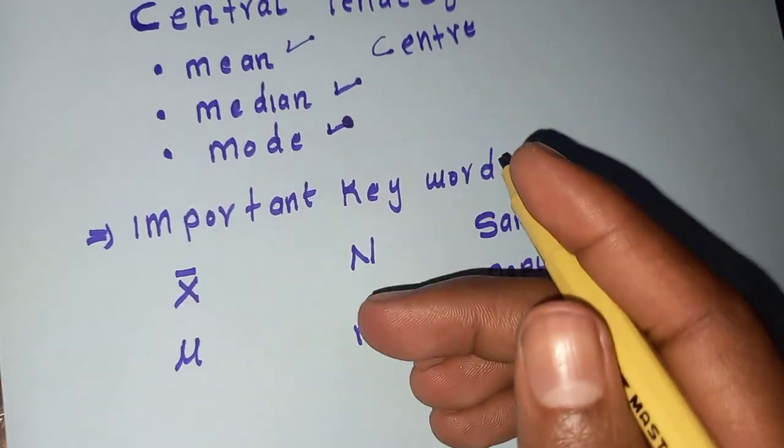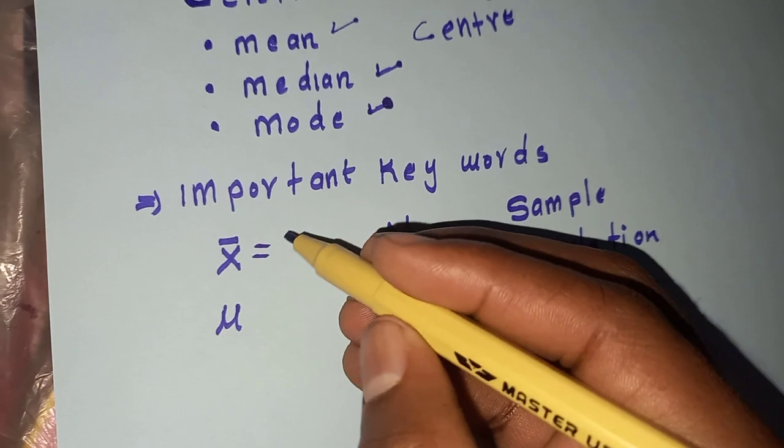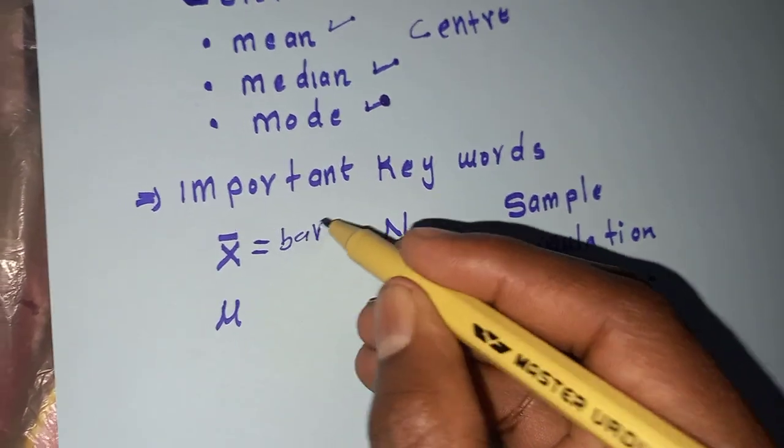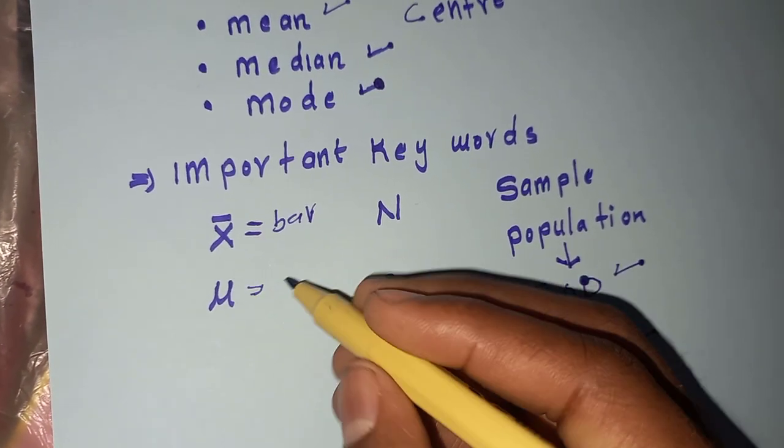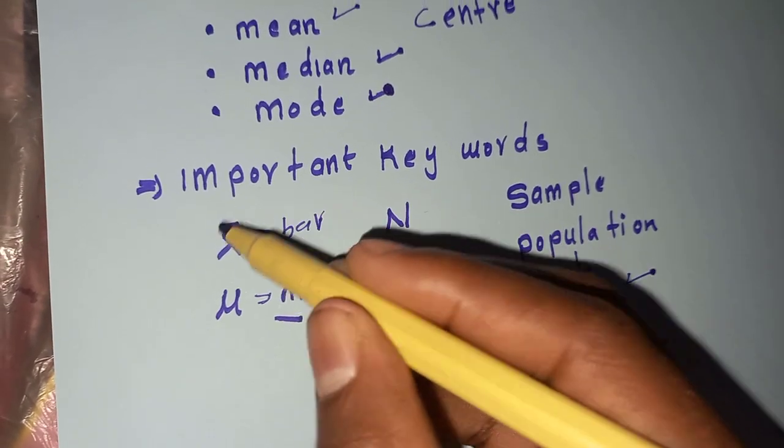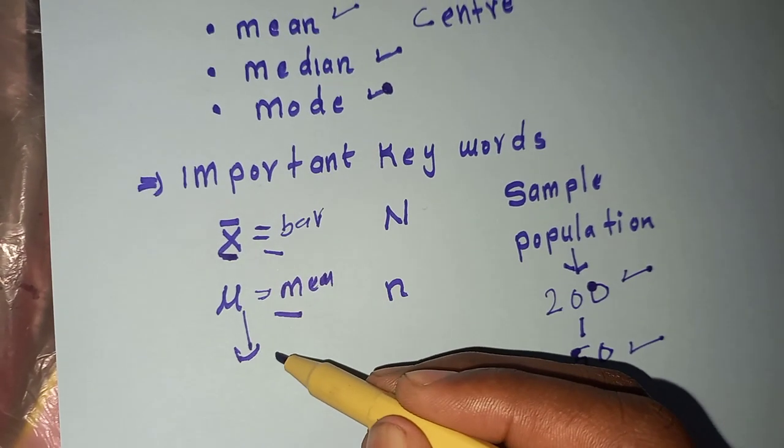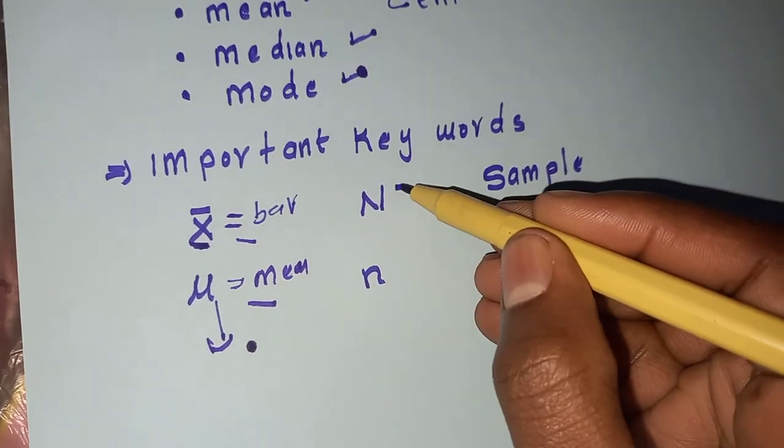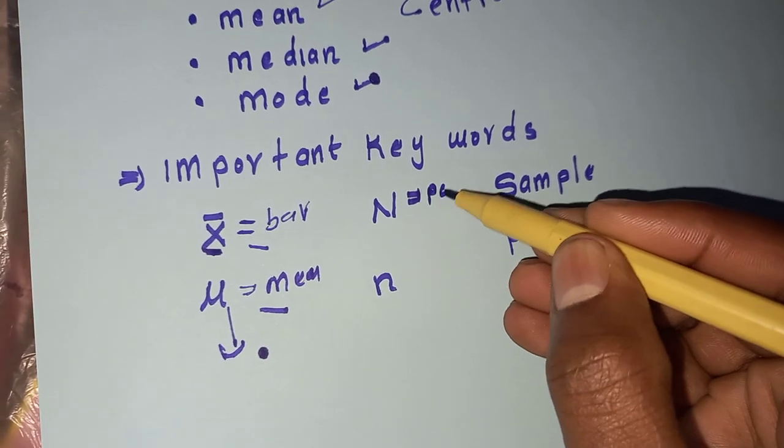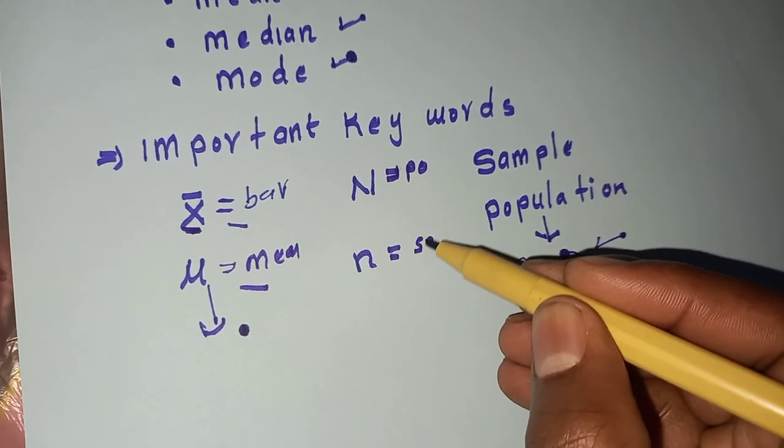Let me explain these abbreviations. This is called x-bar, and this is called mean, or we can say mu. This is standing for sample mean, and this is standing for population mean. N capital stands for population total, and n small stands for sample.